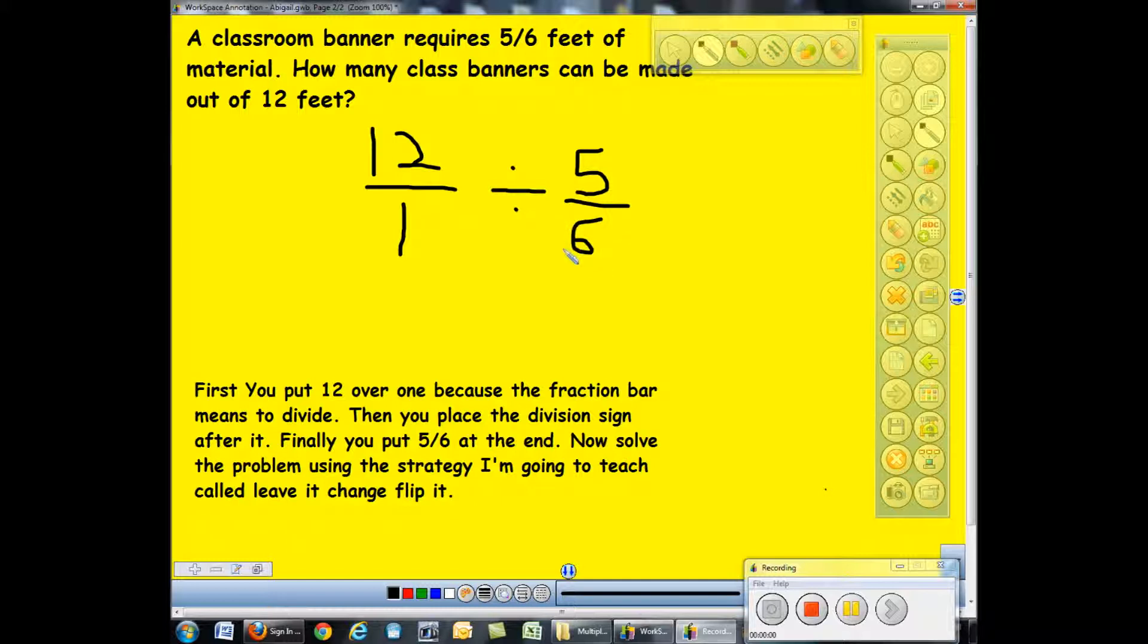Now solve the problem using this strategy I'm going to teach you called leave it, change it, flip it. You just leave the 12 over 1. And then you change the division sign to multiplying. And then flip it as in, and putting 6 over 5. And now multiply it like you normally would. 12 times 6 equals 72. And 1 times 5 equals 5.